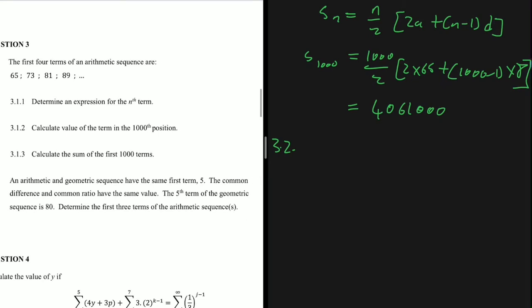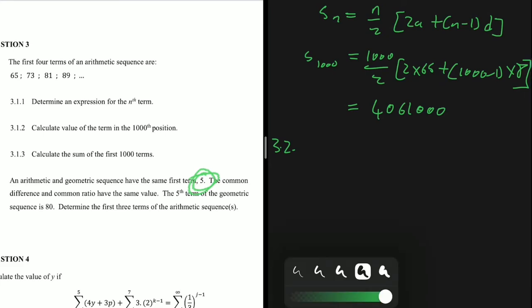Question 3.2 states: an arithmetic and a geometric sequence have the same first term. The common difference and the common ratio have the same value. The fifth term of the geometric sequence is 80. We need to determine the first three terms of the arithmetic sequence. Let the first term be 5 and let the common difference equal the common ratio.